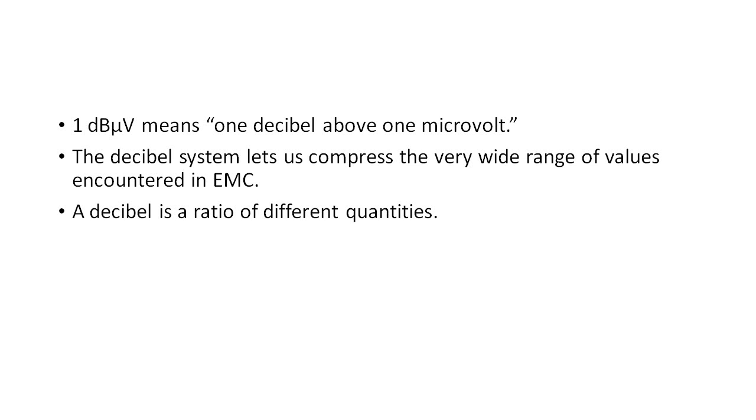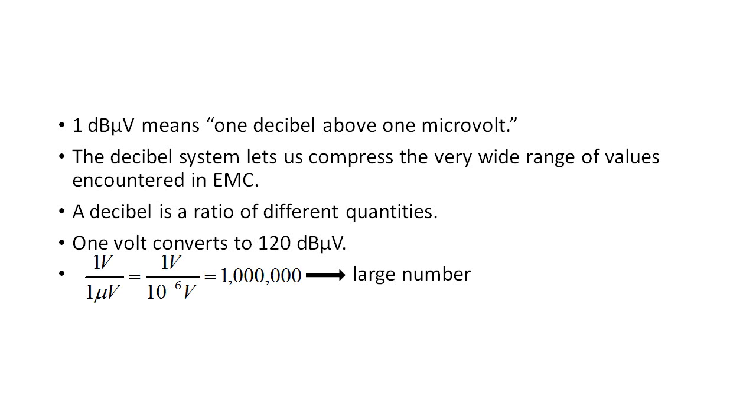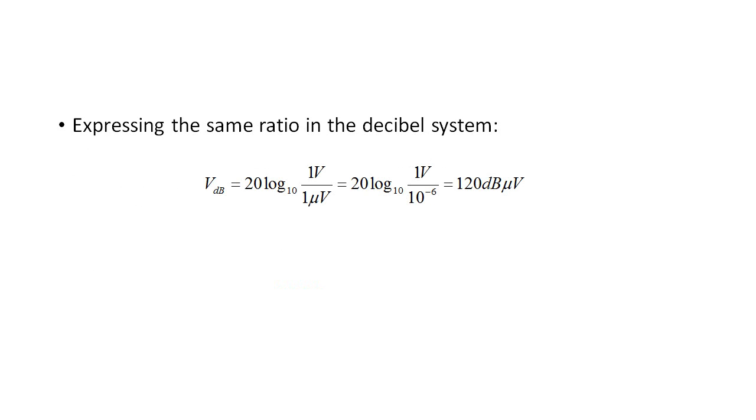To quickly illustrate this point let me show you an example. Decibels are ratios of different quantities. 1 volt converts to 120 dB microvolts, or 120 dB above 1 microvolt. If we divide 1 volt by 1 microvolt, in the absolute system we would get a ratio of 1,000,000, using the base 10 logarithm in the decibel system. That quantity is expressed as you see it on the screen, which shows that 1 volt is equal to 120 dB above 1 microvolt, or 120 dB microvolts.